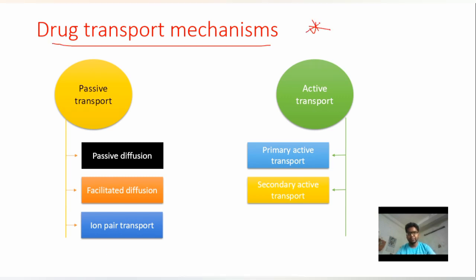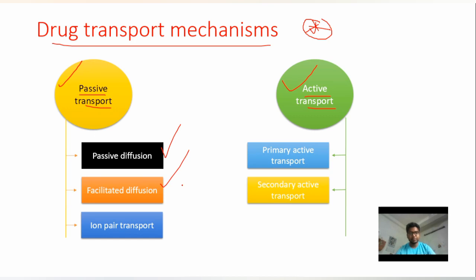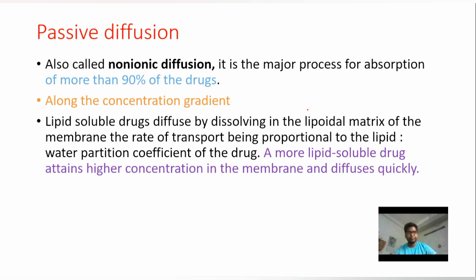Drug transport mechanisms are very important. There are two main transport mechanisms: passive transport and active transport. Passive transport does not use ATP, while active transport uses ATP or energy. Passive transport is divided into passive diffusion, facilitated diffusion, and ion pair transport. Active transport is divided into primary and secondary active transport.